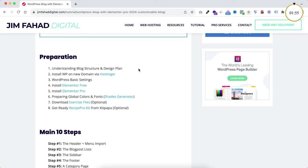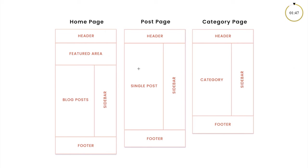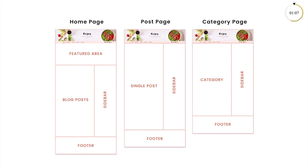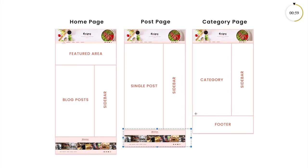It's very important that you understand the blog structure, and it's not that technical to create a blog. In your blog website you must have three key pages: a home page, a single blog post page, and a category archive page. By using Elementor Pro it's really easy to create a professional blog. If we create the header on the home page, we can reuse that same header on the post page and category page. Same goes for the footer.